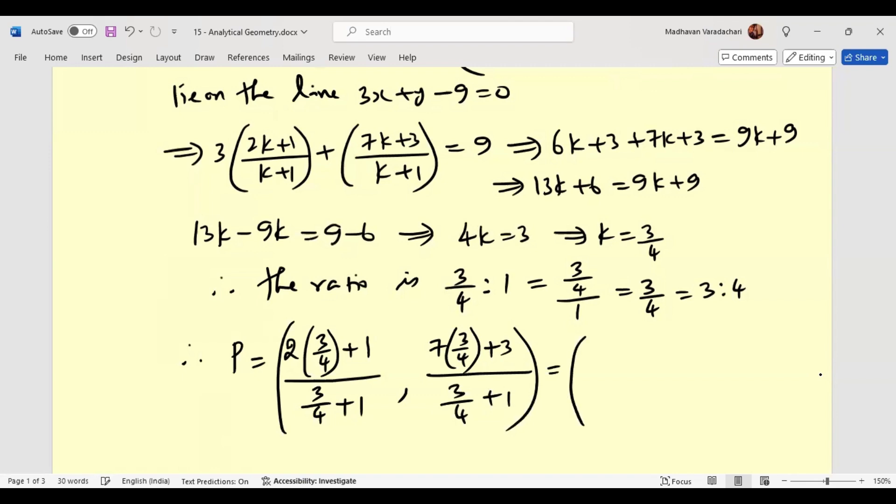So that numerator LCM will be 4, denominator also LCM will be 4. Numerator is 6 plus 4, denominator is 3 plus 4. Here again numerator and denominator LCM is 4. Here it is 21 plus 12, here it is 3 plus 4.